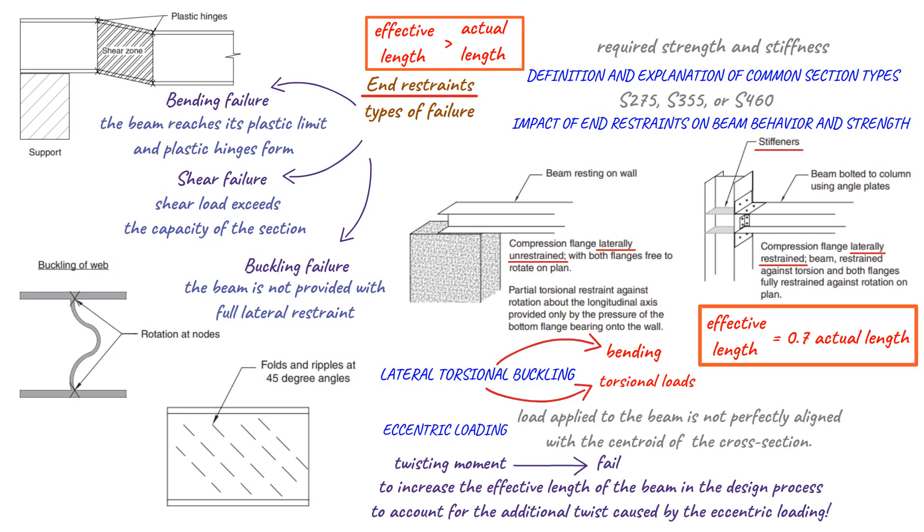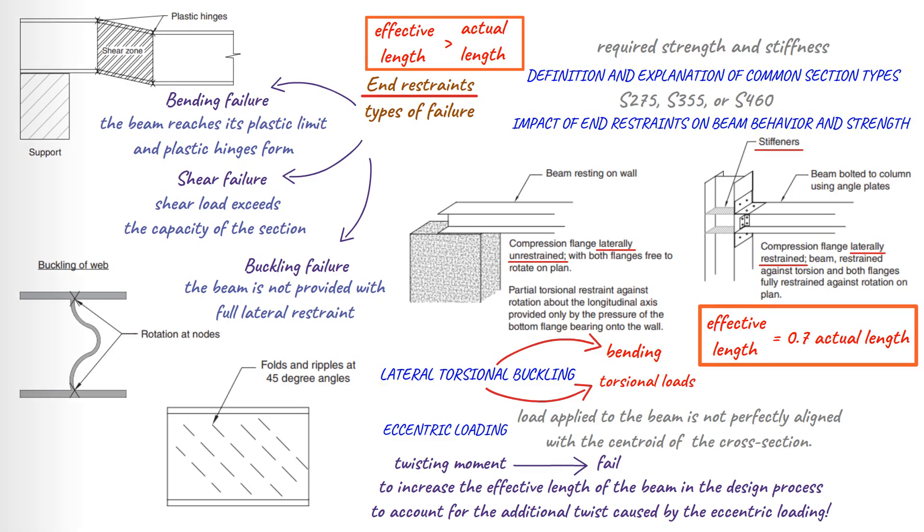End restraints also have an impact on the effective length of the beam, which can affect the size and cost of the beam required to carry the load. It's important to understand the various types of failure that can occur in steel beams and to consider these factors during the design process in order to ensure the structural integrity and safety of the beam. Thank you for watching this video on the surprising impact of end restraints on steel beam strength.